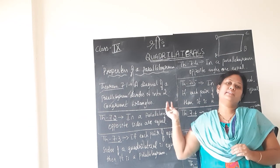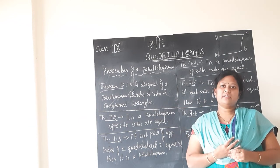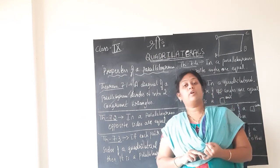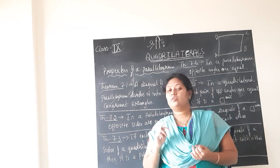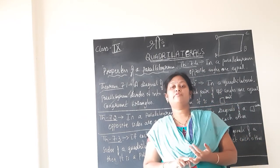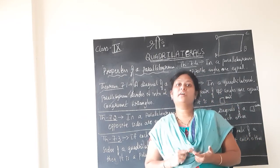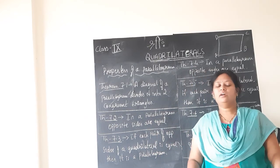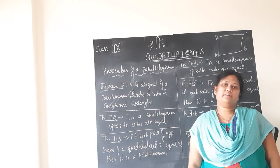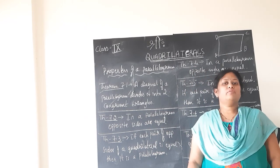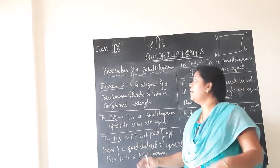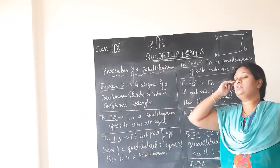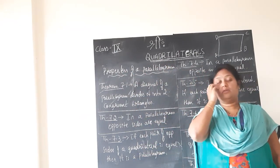We were discussing in the last lesson about quadrilaterals. We studied about the properties of quadrilaterals, about the types of quadrilaterals, and also about the angles and properties of the quadrilateral. So we should proceed in today's session and learn mainly about the properties of a parallelogram.